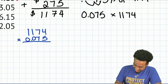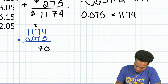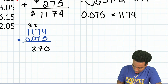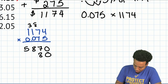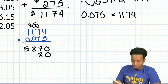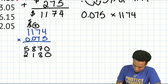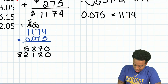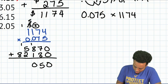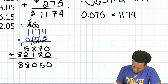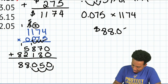Working through the multiplication of 1,174 × 0.075 step by step: 4×5=20 carry 2; 7×5=35 plus 2 is 37; 1×5=5 plus 3 is 8; 1×5=5. Then the next row: 4×7=28 carry 2; 7×7=49 plus 2 is 51; 1×7=7 plus 5 is 12; 1×7=7 carry 1 is 8. Adding it all up and moving the decimal 3 places gives us $88.05 in tax.